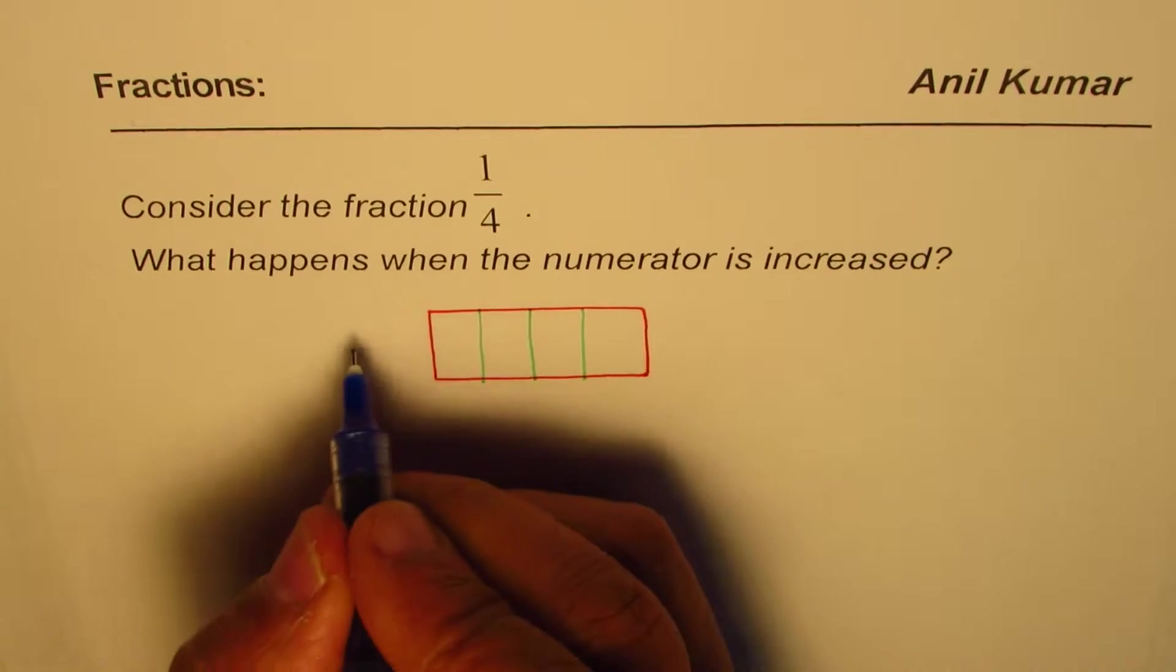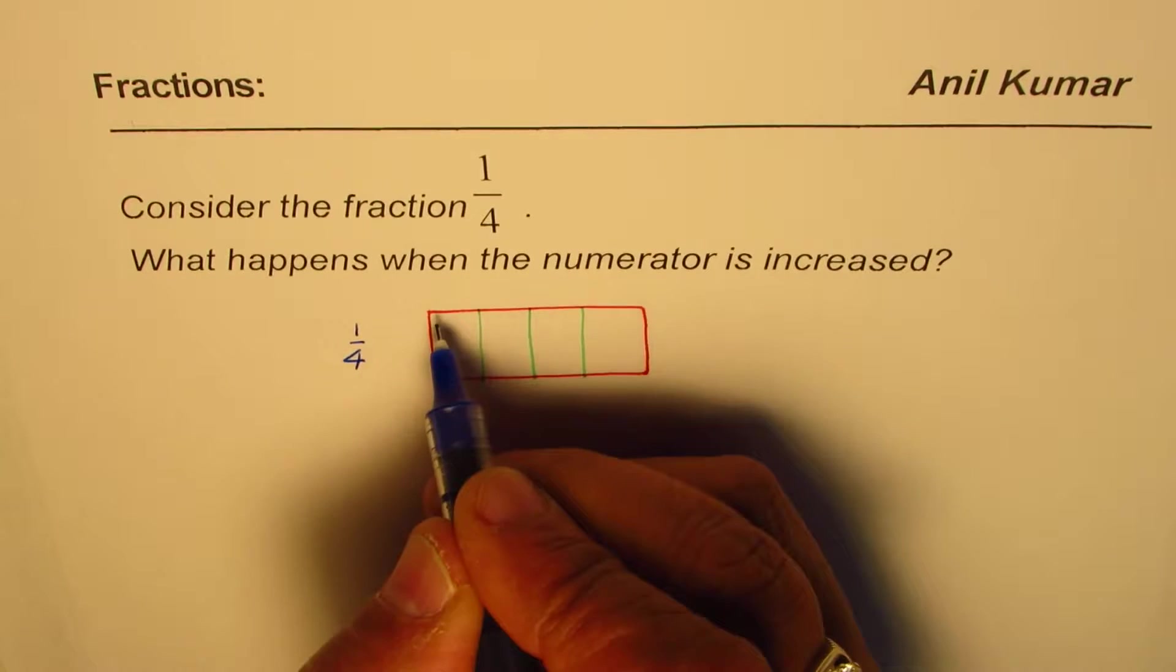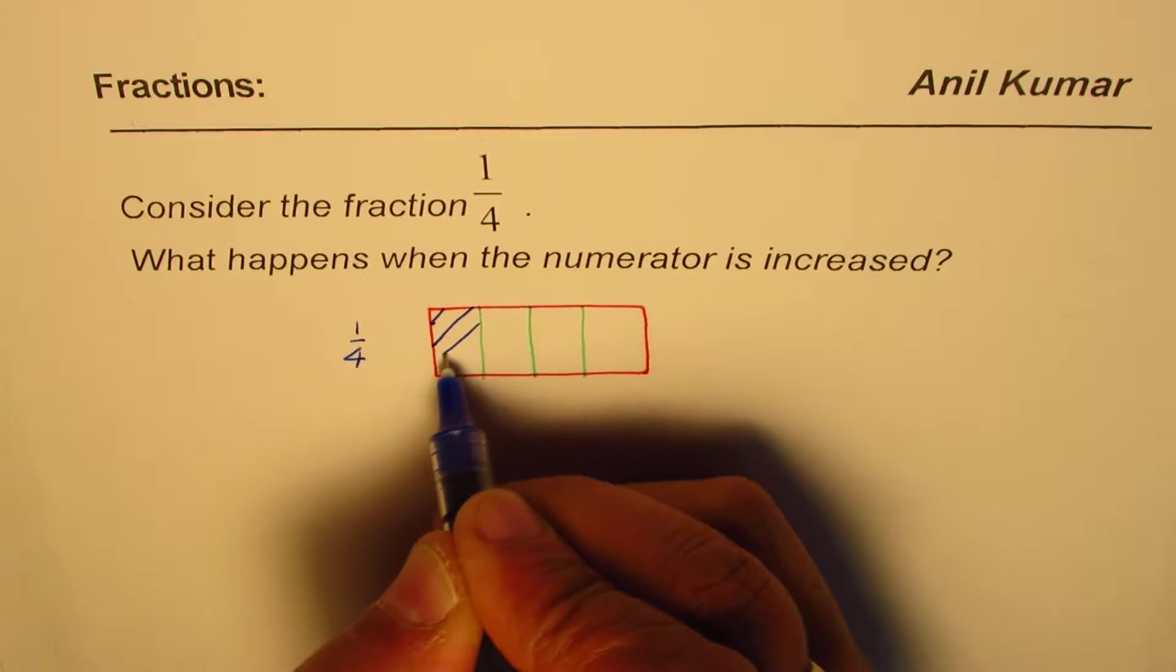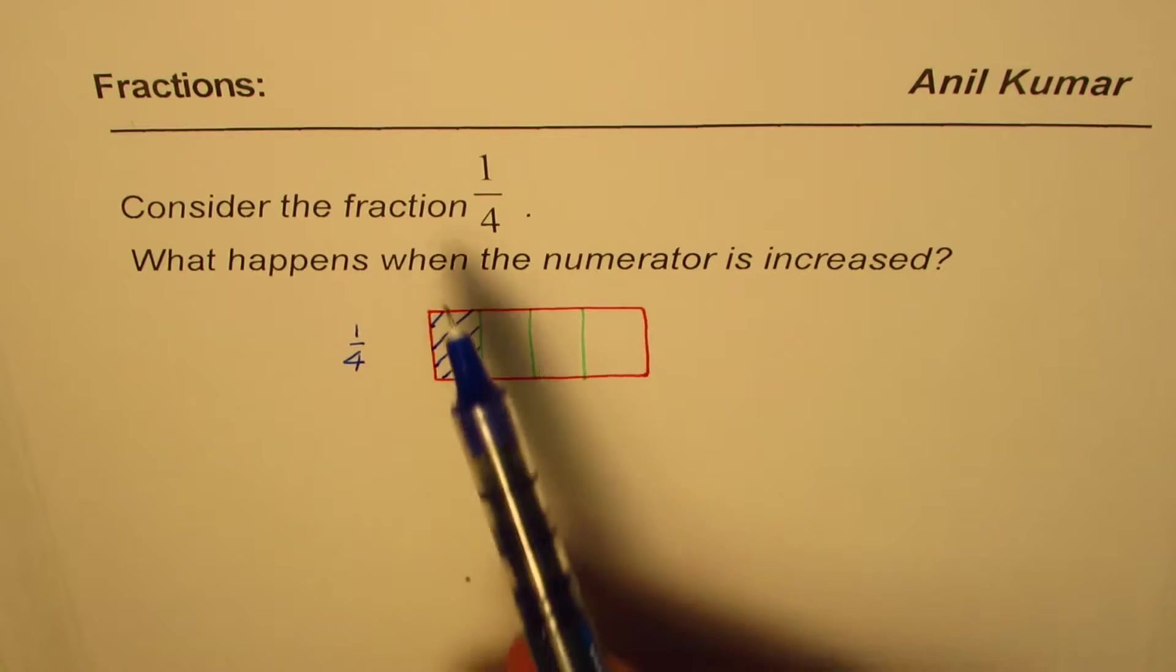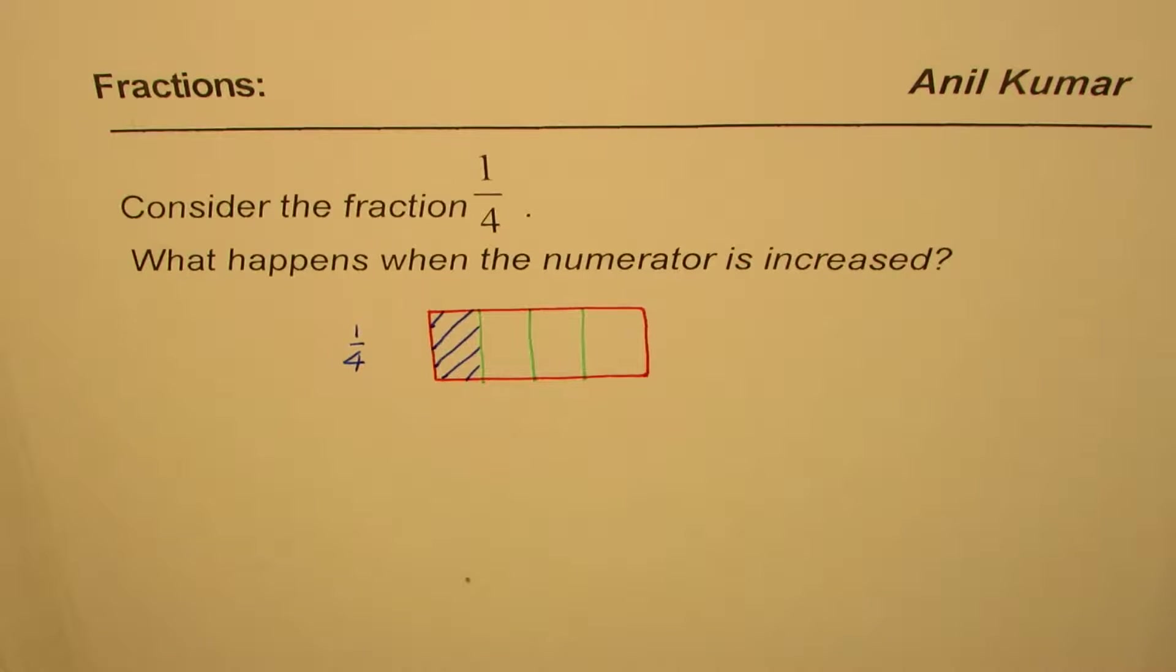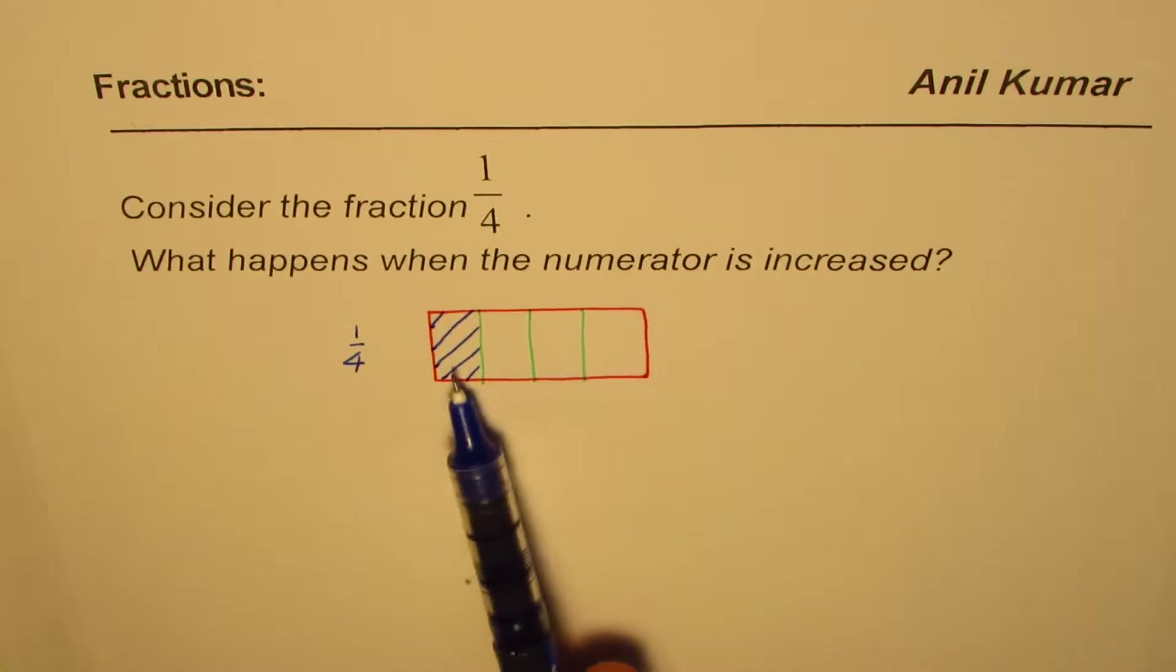1 over 4 means what? 1 over 4 means you select 1 out of 4. This is what you get. So if I say you will get 1 fourth of a chocolate bar, the situation will be kind of like this. Do you get my idea?